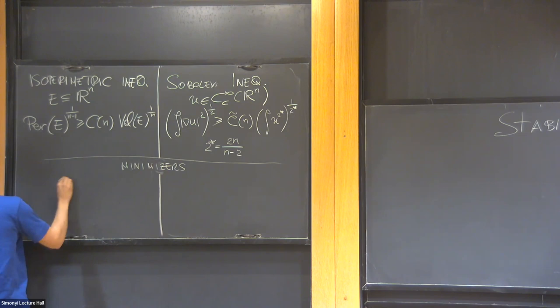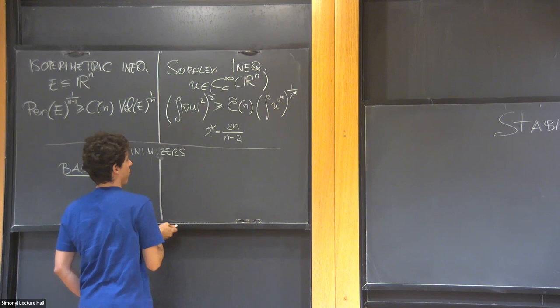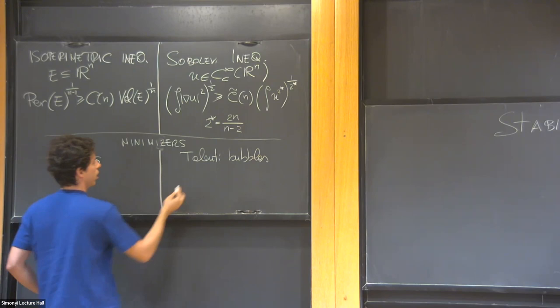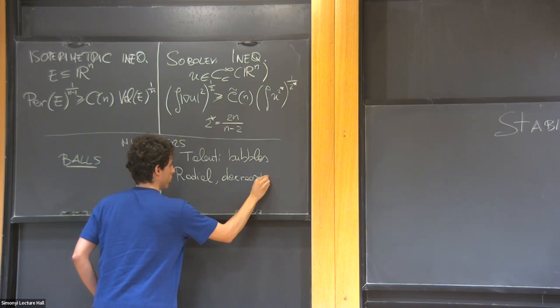Here, they are just Euclidean balls. Here, they are the family of Talenti bubbles. Talenti bubbles have an explicit formula, but it's not important here. What you should keep in mind is that they are radial, and they are decreasing, and they are not compactly supported. So the profile goes something like this.